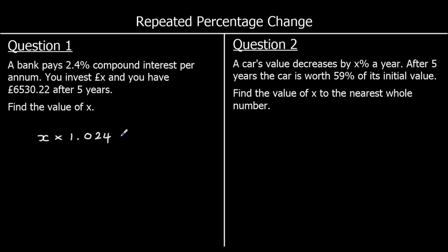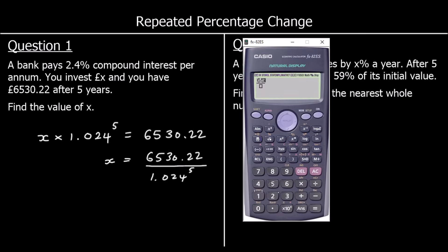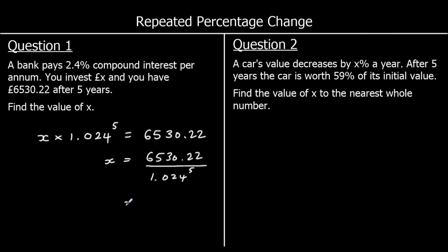To get X by itself, we divide both sides by 1.024 to the power of five. We'll type it into the calculator, and we've got £5,800. So we started with £5,800.